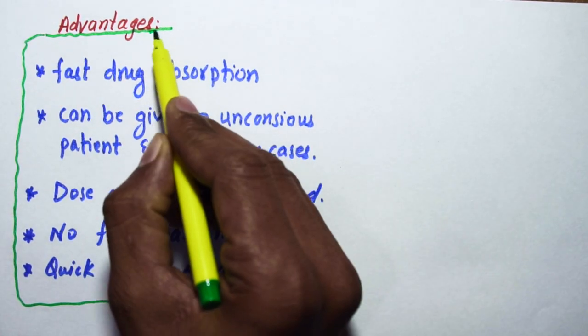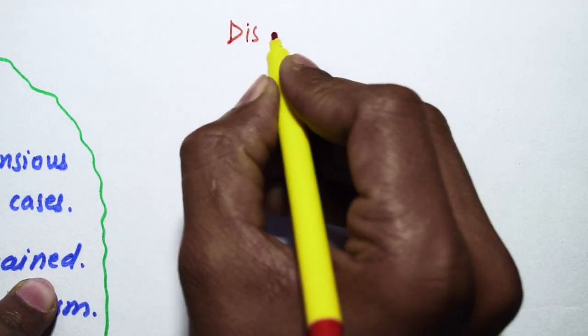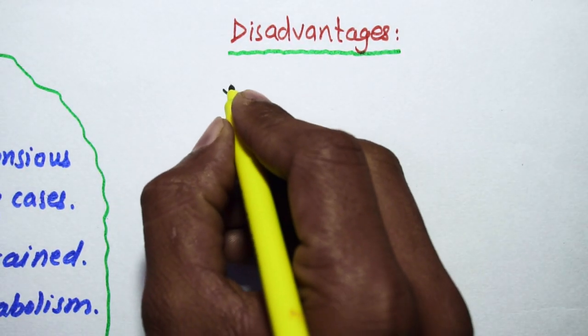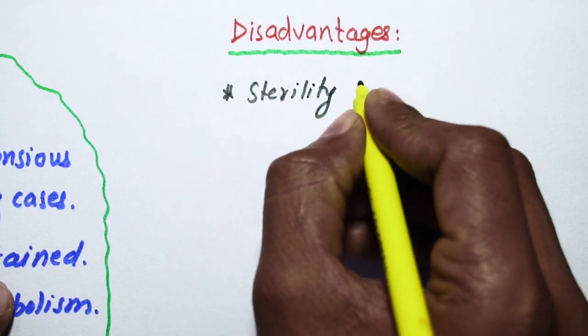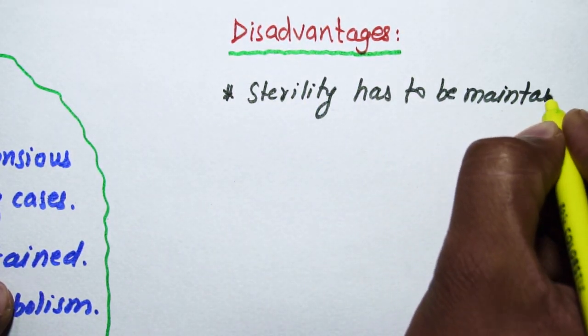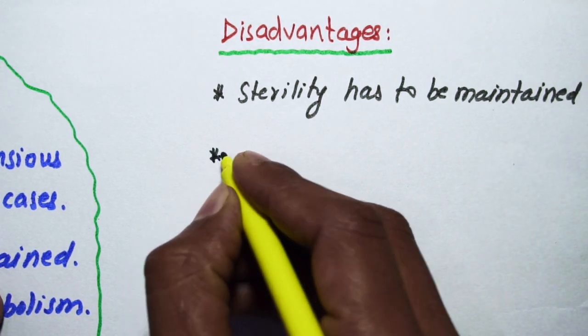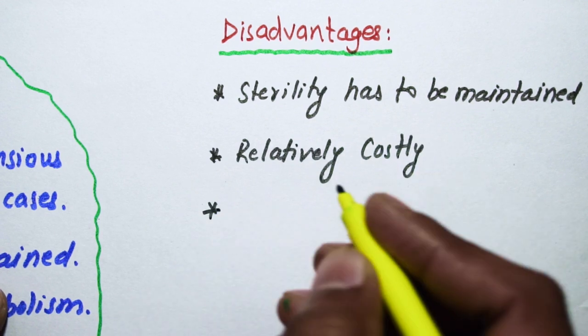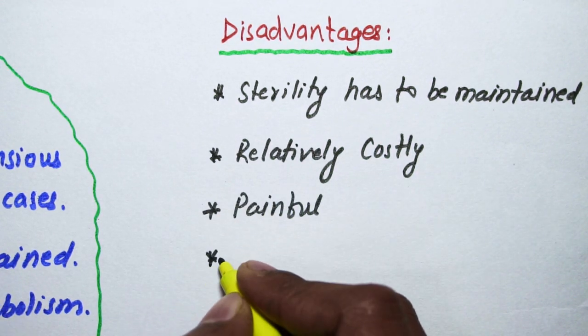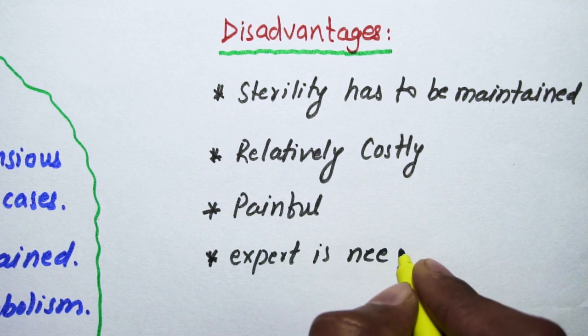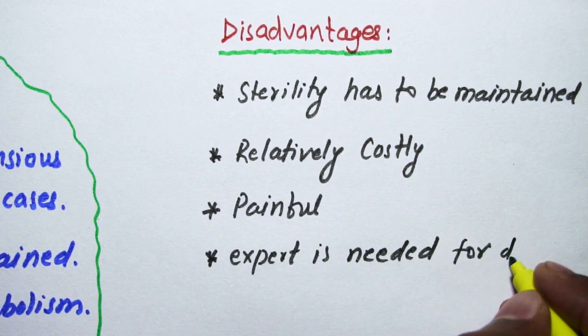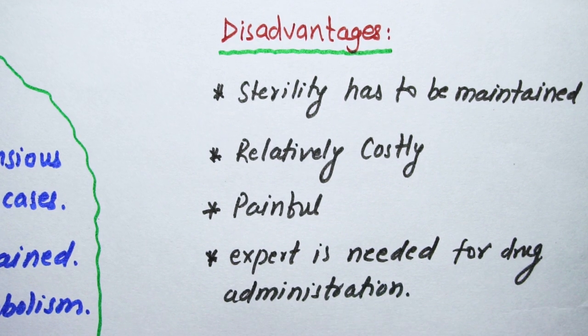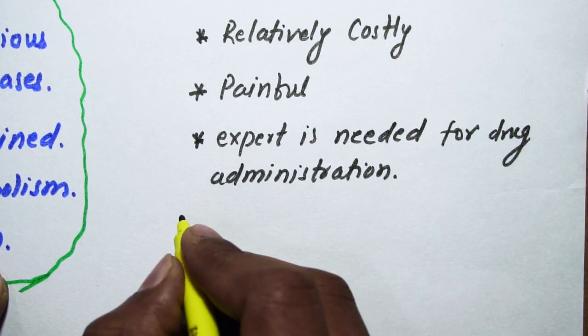Now we will discuss disadvantages of parenteral routes. The first one is asepticity has to be maintained all the time because the drug is administered directly to blood circulation. They are relatively costly, also painful, and an expert is needed for drug administration.